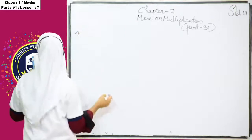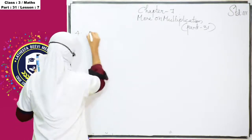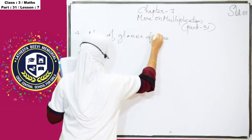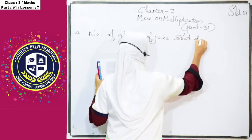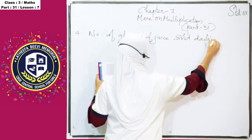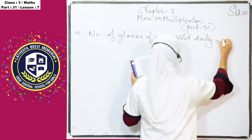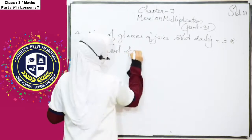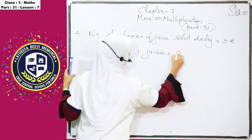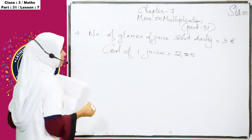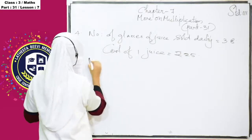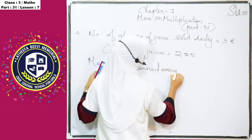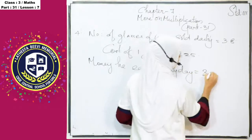How much does he earn every day? So how will you write the statement? Question number four. Number of glasses of juice sold daily is equal to 38 and cost of one juice is equal to rupees 25.